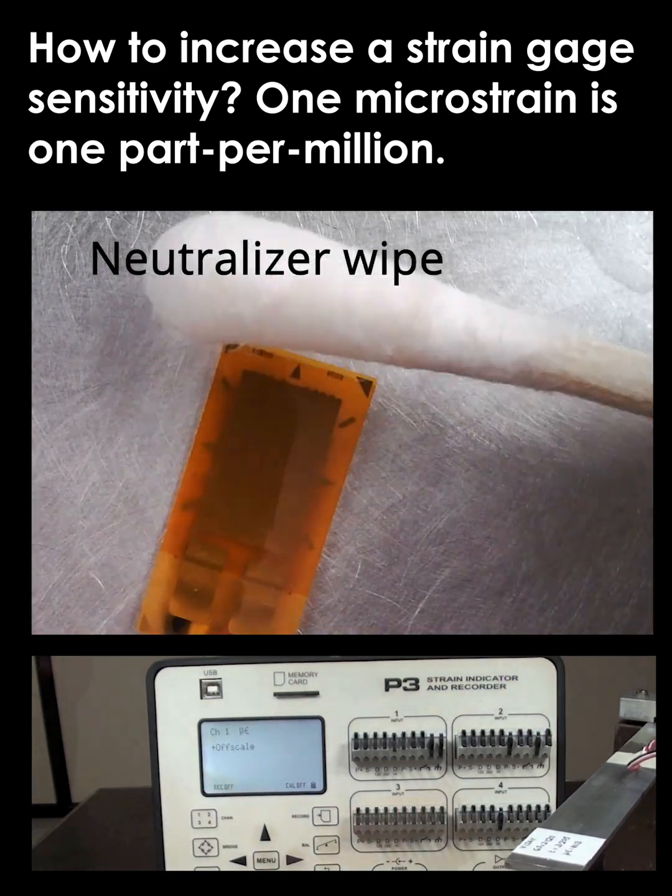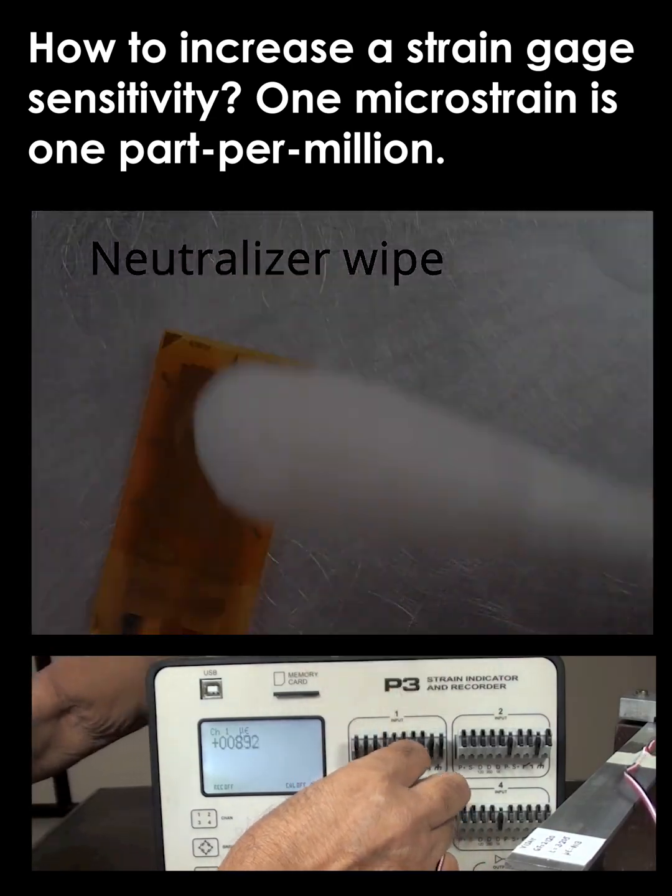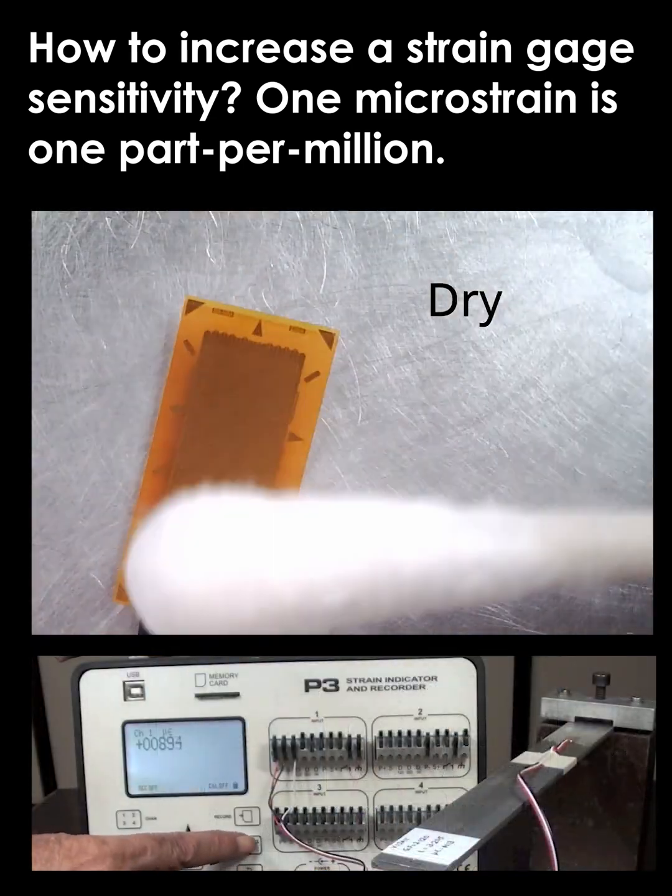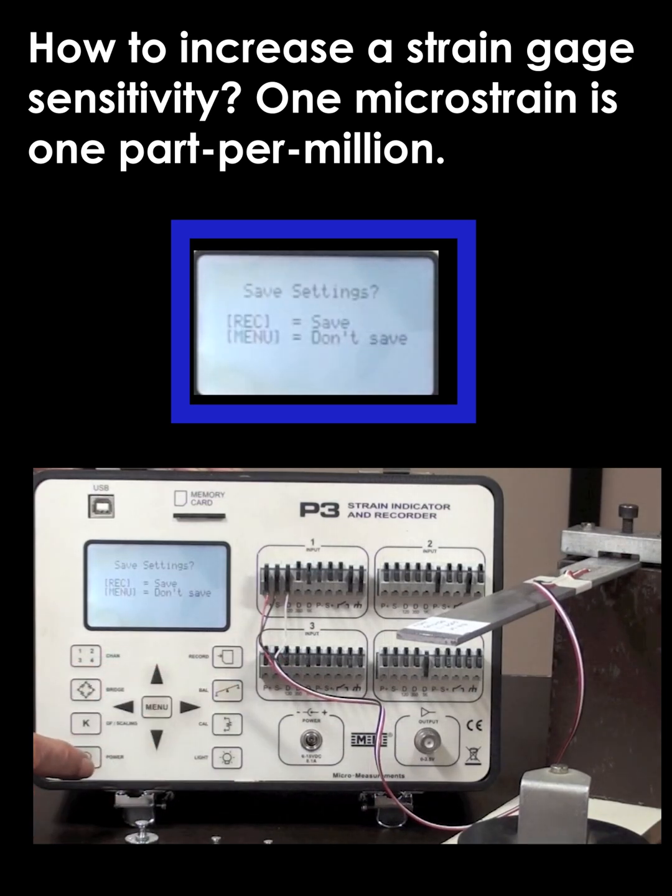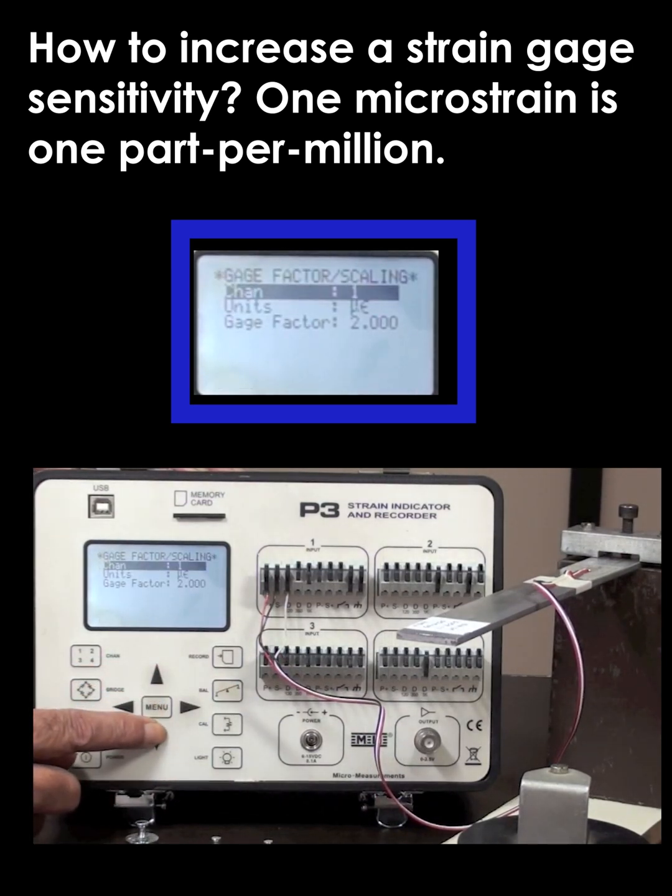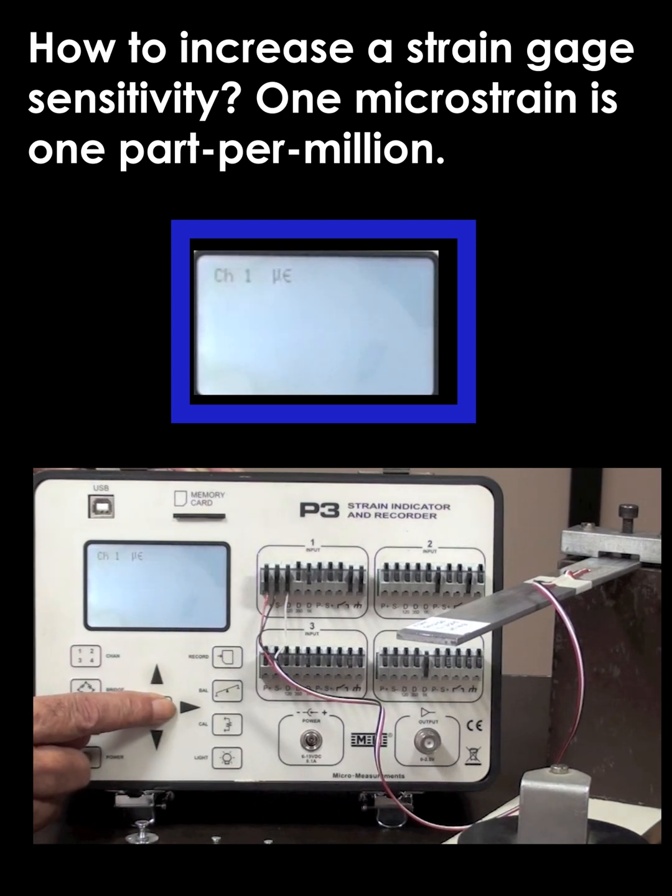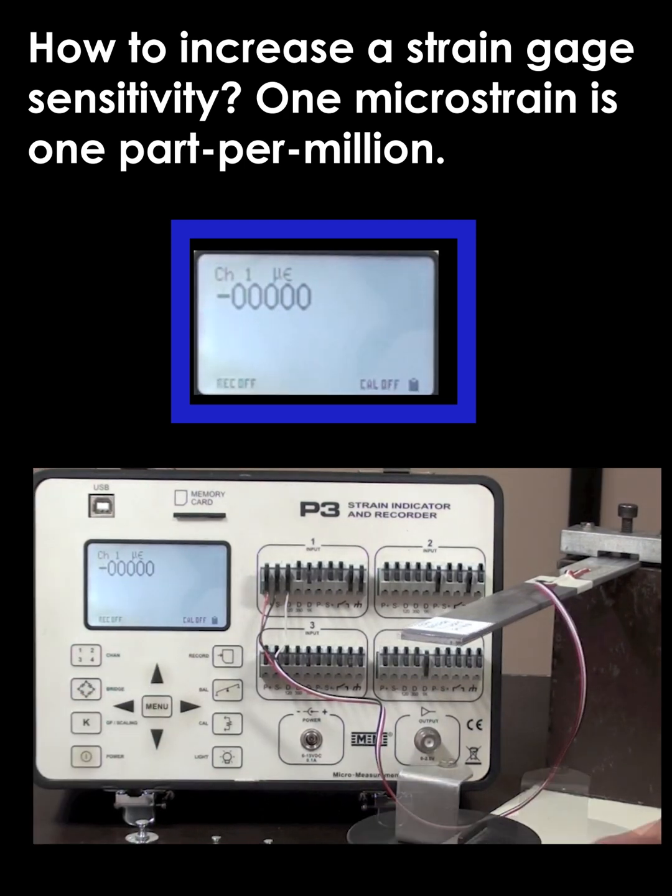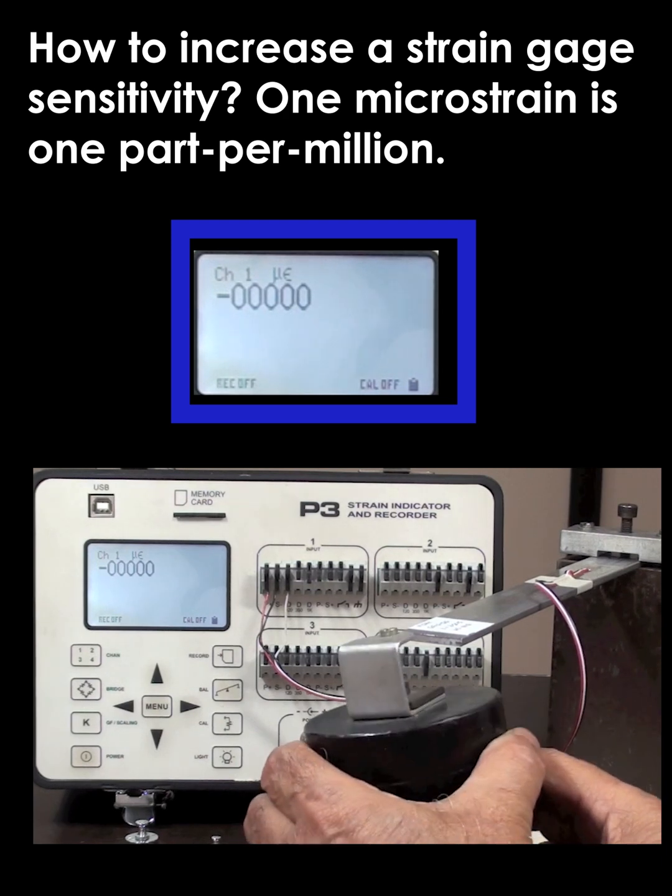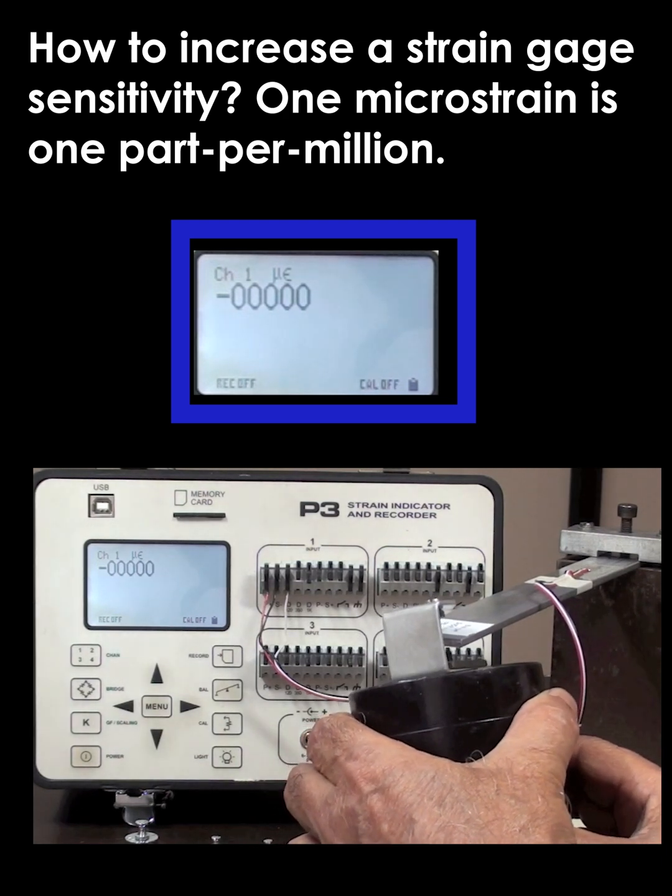Now we're going to test it and connect it into a model P3 strain indicator. This is going to be connected as a 3-wire quarter bridge, and we're going to balance the indicator out to zero. We'll also set the sensitivity of the gauge factor for the strain gauge—we'll input that into the P3 to be 2.120.